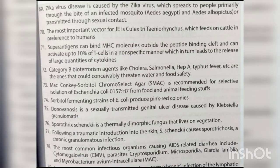Zika virus disease is caused by the Zika virus, which spreads to people primarily through the bite of infected Aedes aegypti and Aedes albopictus mosquitoes, and is also transmitted through sexual contact. The most important vector for Japanese encephalitis is Culex, which feeds on cattle in preference to humans. Superantigens can bind MHC molecules outside the peptide binding cleft and can activate up to 10% of T-cells non-specifically, leading to release of large quantities of cytokines.